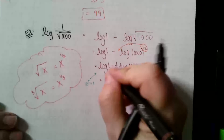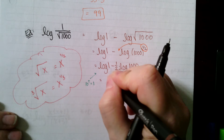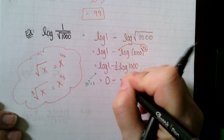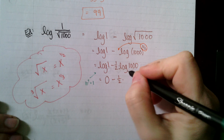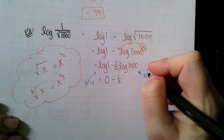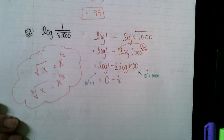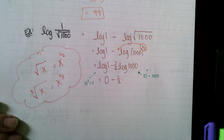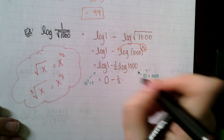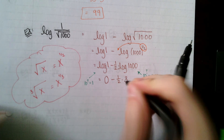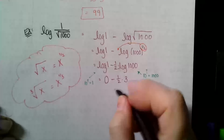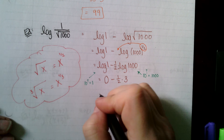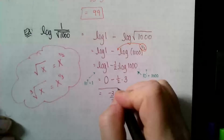The log of any base of 1 is zero — log 1 equals 0. For log of 1000: 10 to what power gives 1000? That's 3. Replacing log 1 with 0 and log 1000 with 3, I have: 0 minus one-half times 3. That gives negative three-halves.